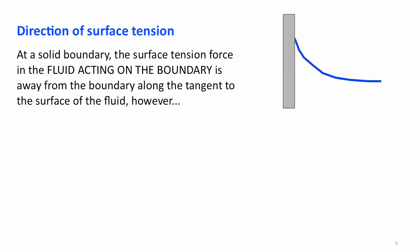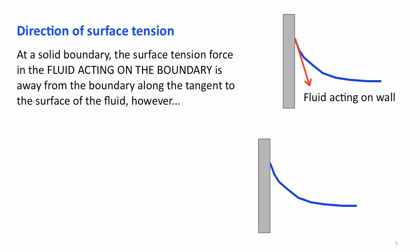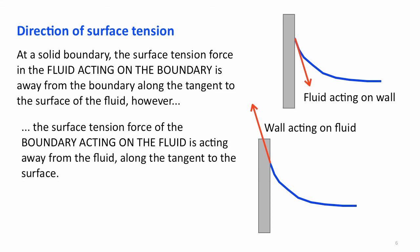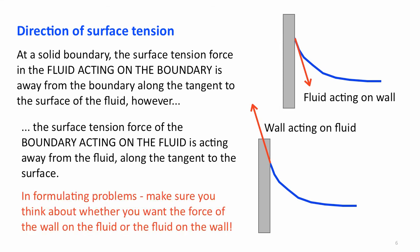Now let's look at the direction of surface tension at a solid boundary. If we think about the fluid acting on the boundary, then the fluid is pulling away from the boundary — pulling down, in this case, the fluid acting on the wall. But if we want to think about the force of the wall acting on the fluid, it's equal and opposite to that. The key point is to make sure you think about whether you want the force of the fluid on the wall, or the force of the wall on the fluid.